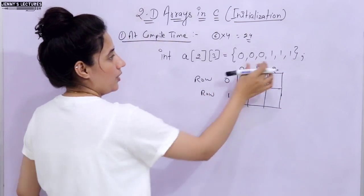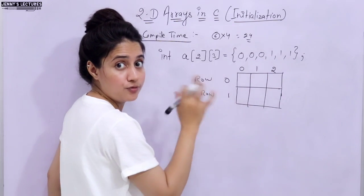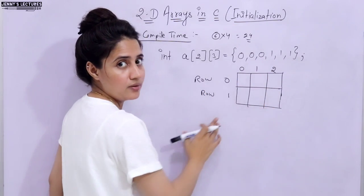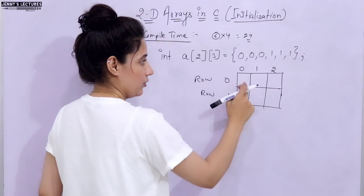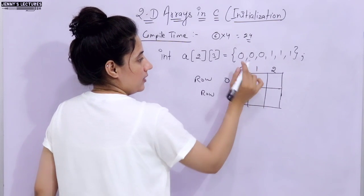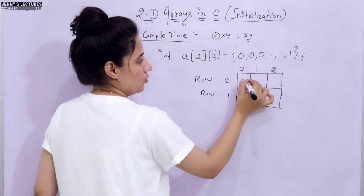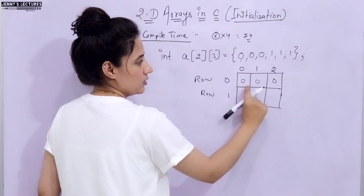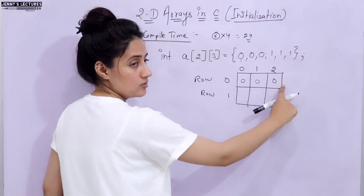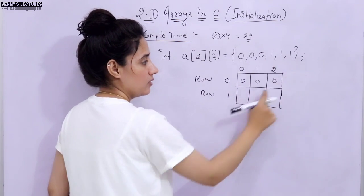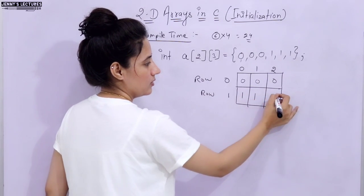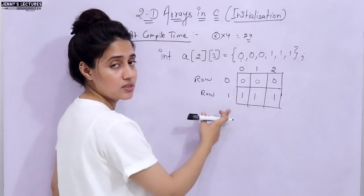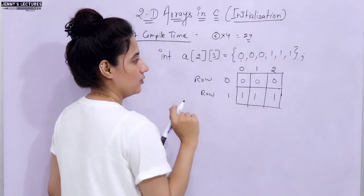How is the data initialized? First, in the first row, the values 0, 0, 0 are written row by row. Once all three columns of the first row are filled, then 1, 1, 1 go into the second row. This is how data is initialized.